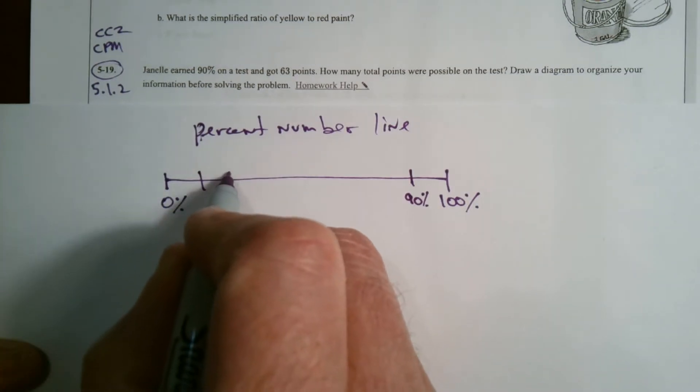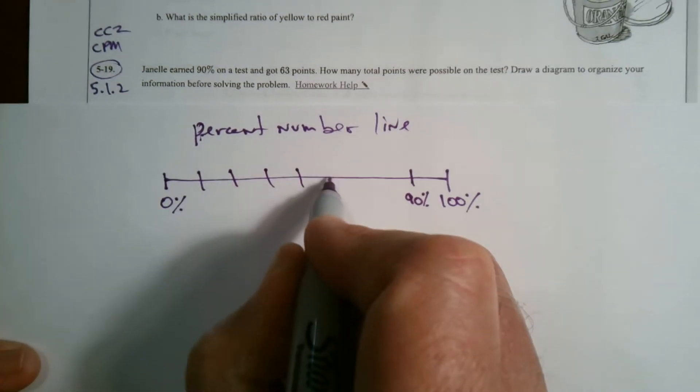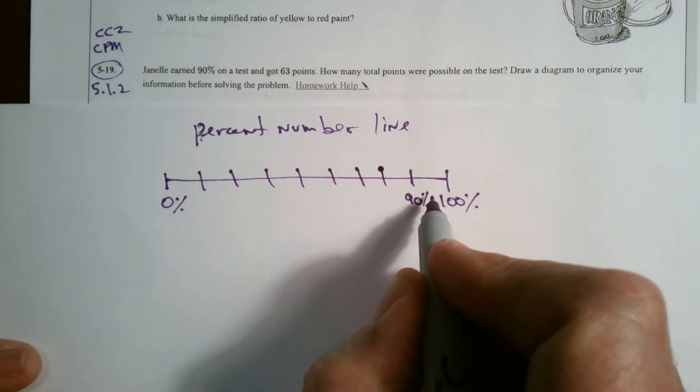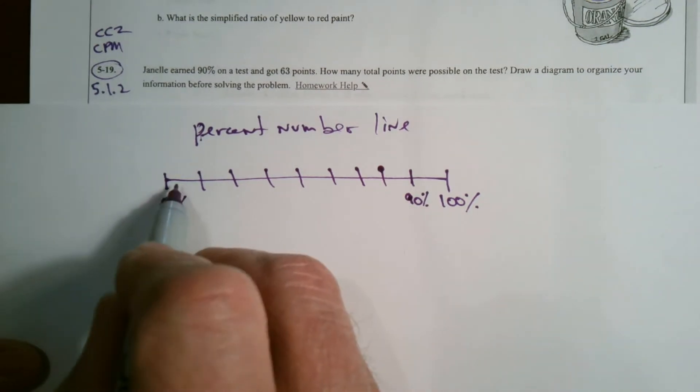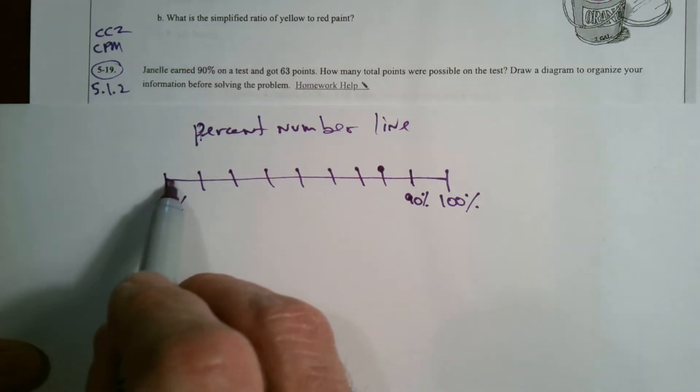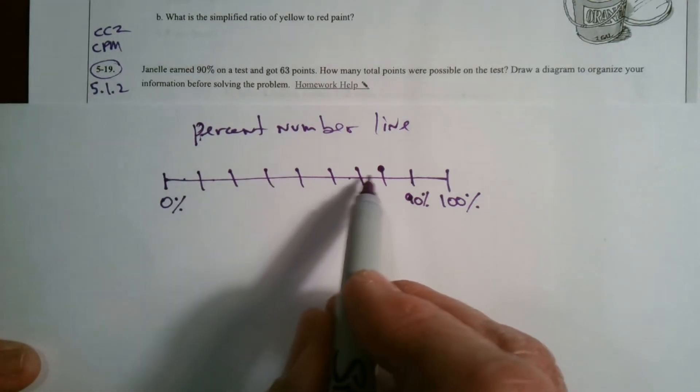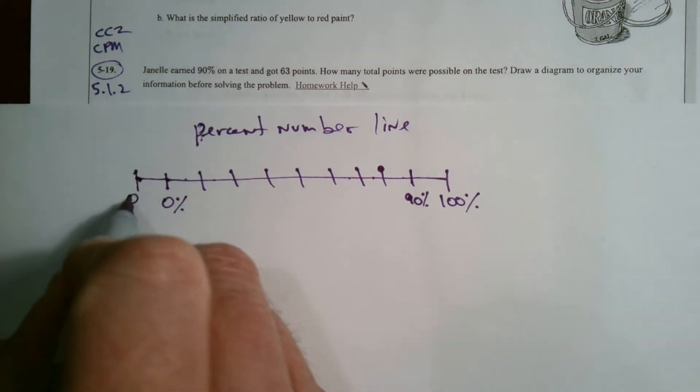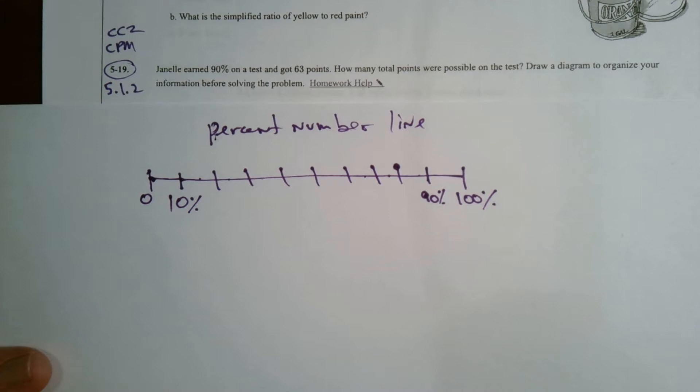So I'm going to have 10, 20, 30, 40, 50, 60, 70. Wait. 10, 20, 30, 40, 50, 60, 70, 80, 90. Oh, I'm going to need an extra one here. So I'm going to make this zero and that 10%.